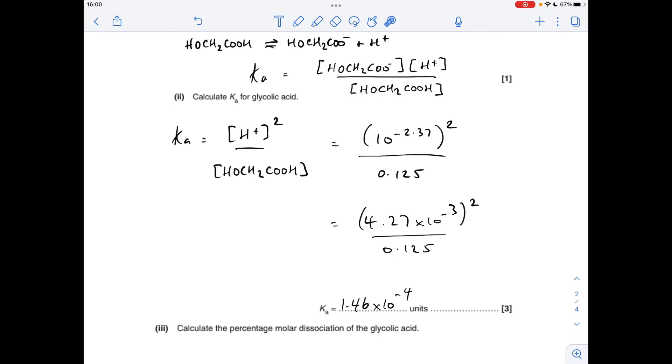So if we think about units, we'll go back to this. We've got moles per decimeter cubed squared on the top, divided by moles per decimeter cubed. So one of these will cancel with that, and we're left with moles per decimeter cubed for the units.